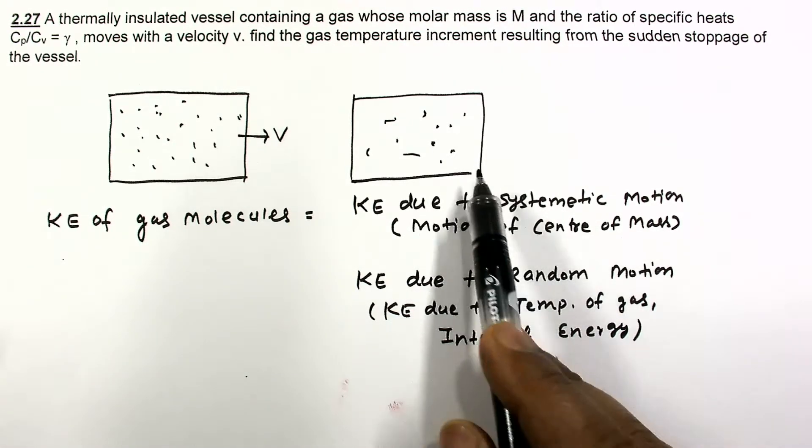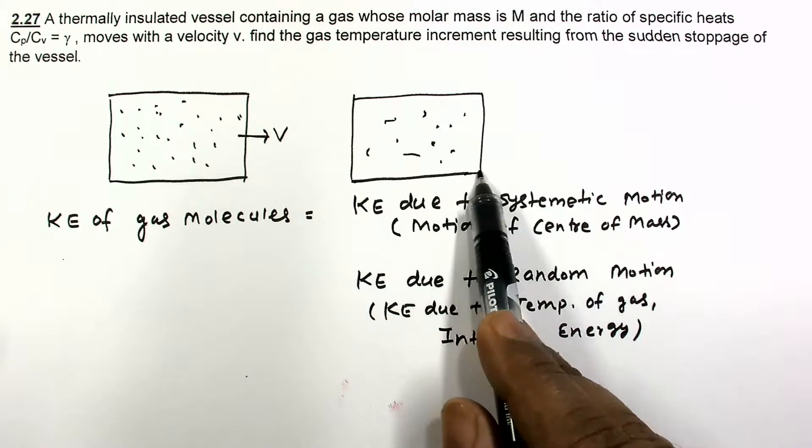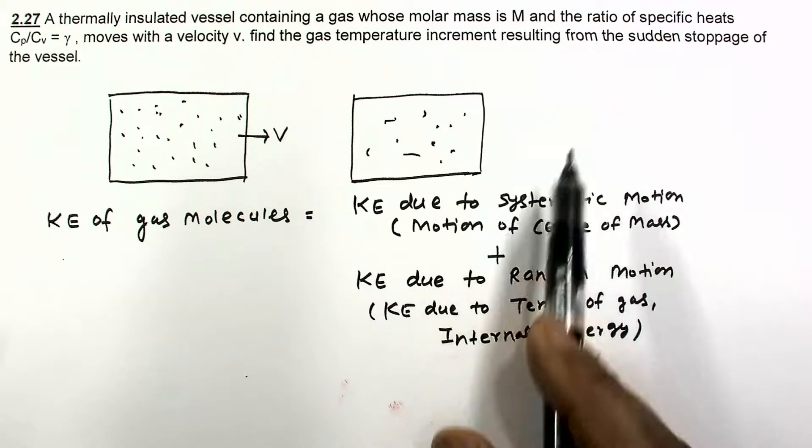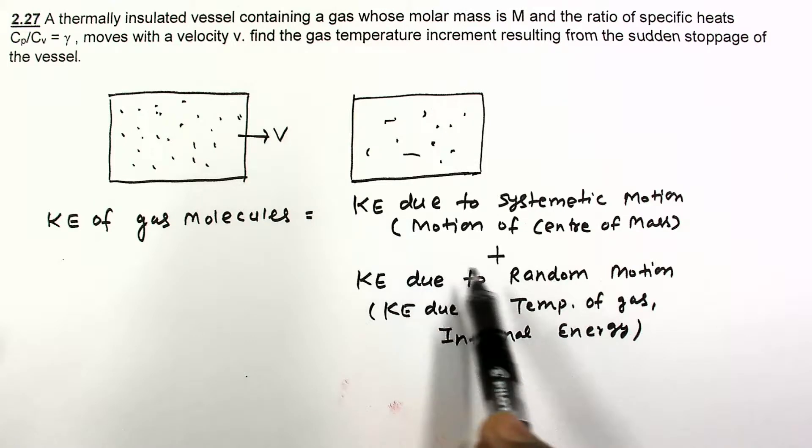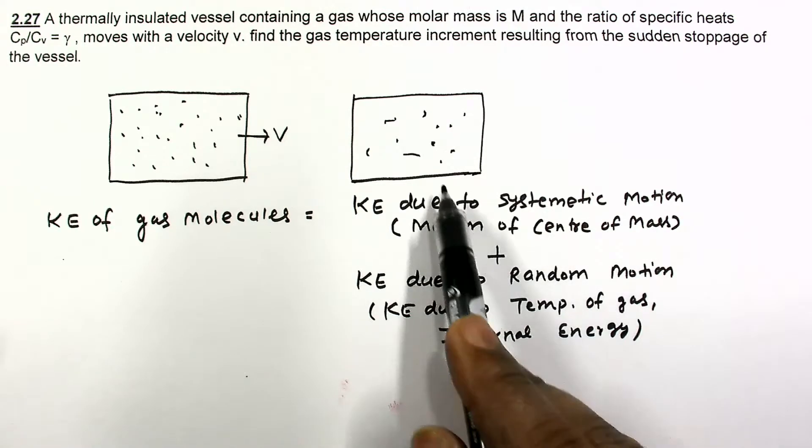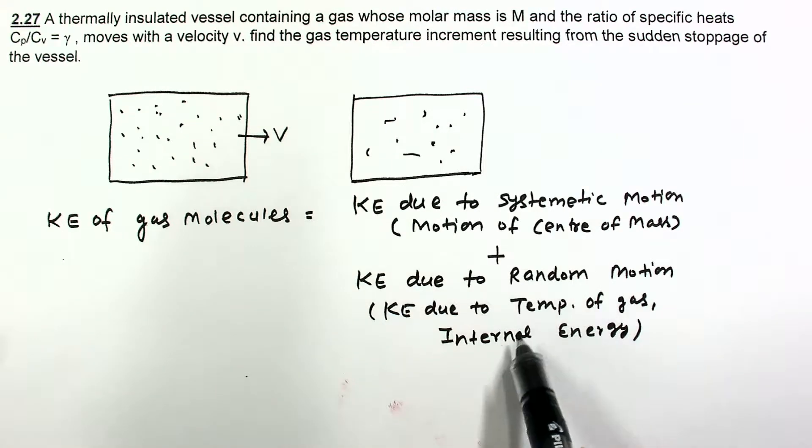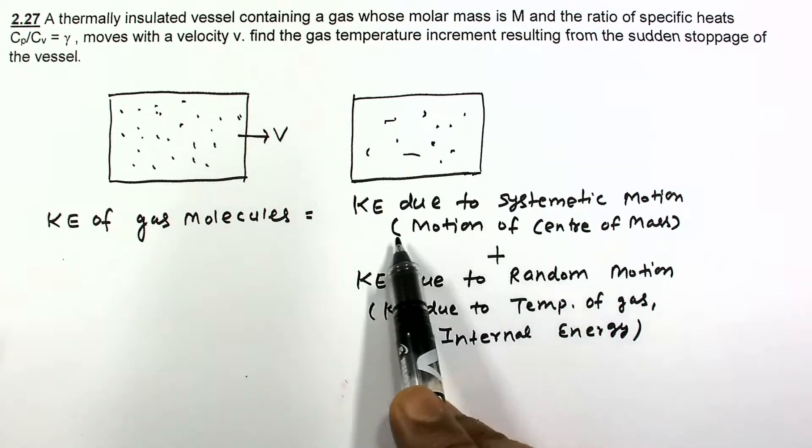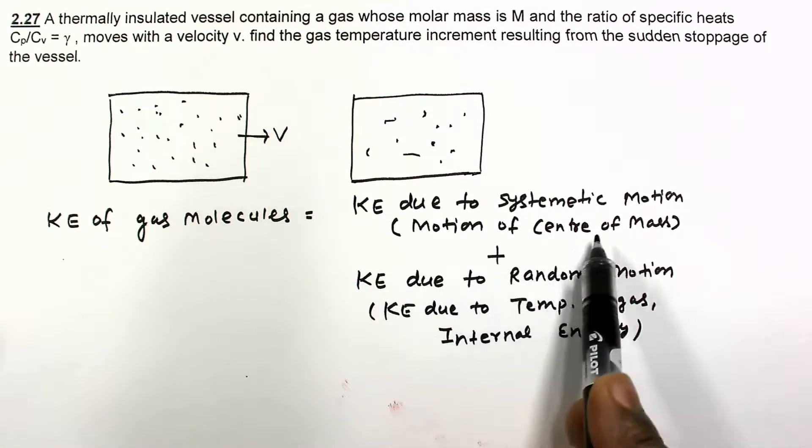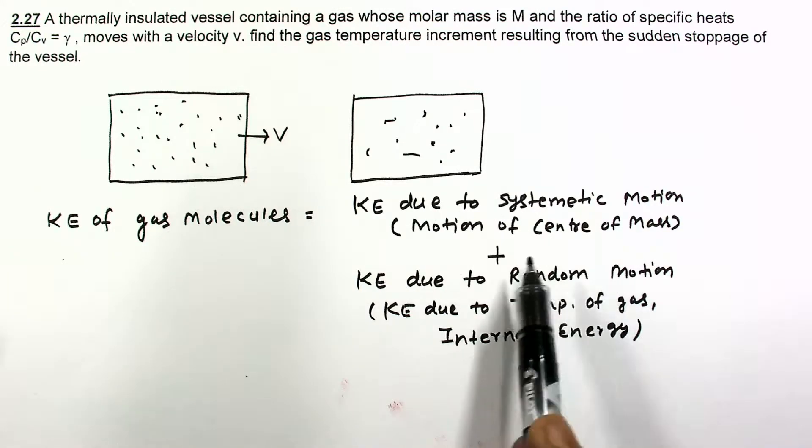And since this is thermally insulated, so no energy can come outside. So all the energy due to loss of this kinetic energy will be used up to increase the temperature, to increase the internal energy of the gas. So all the kinetic energy lost due to systematic motion will be used to increase the internal energy of the gas.